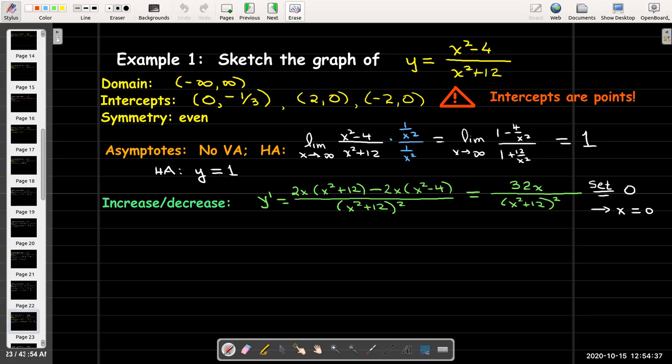If I set that equal to zero, that can only be zero when x equals zero. So that's our only critical number, x equals zero. The derivative is zero when x equals zero. I'm going to make a number line. Zero is my critical number. Since the denominator in the expression for the first derivative is always positive, I only need to look at the sign of the numerator. When x is negative, the first derivative is negative; when x is positive, the first derivative is positive.